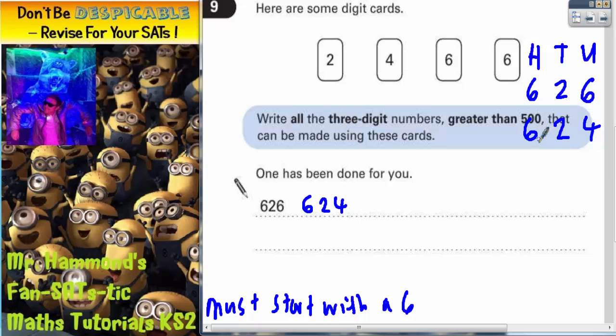Is there anything else that would be in the 620s? Well, the only other card we've got left is the other 6. But this would also give us 626. So we're now going to need to change the tens digit.